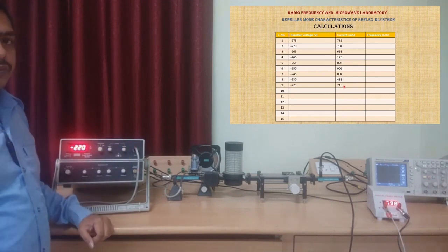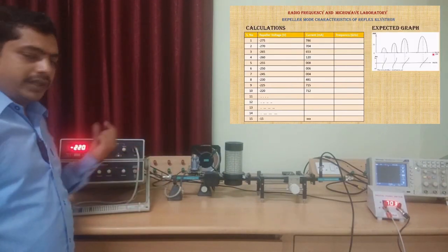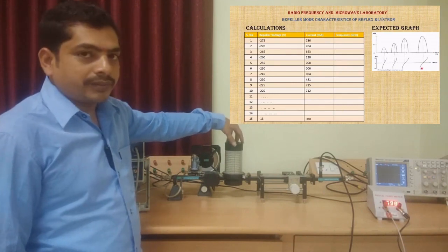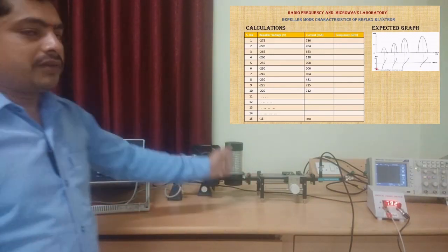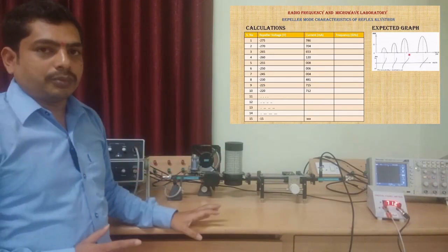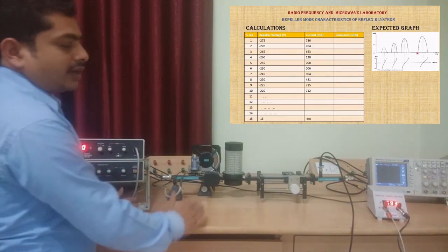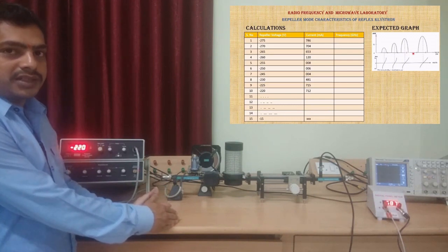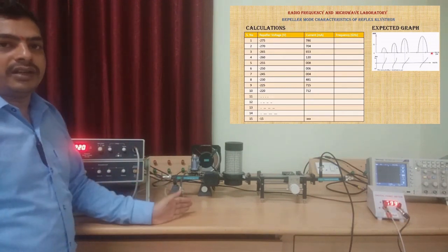While we are doing this procedure for each and every step, we need to find out frequency by using frequency meter. By taking these frequency readings, we are going to get a plot between repeller voltage and frequency. For a certain period of time we are not going to get any power at output side, like from one mode to another mode a certain gap will be there. In that gap we are not going to get any outputs. To avoid this condition, we have to know modes of the reflex klystron.